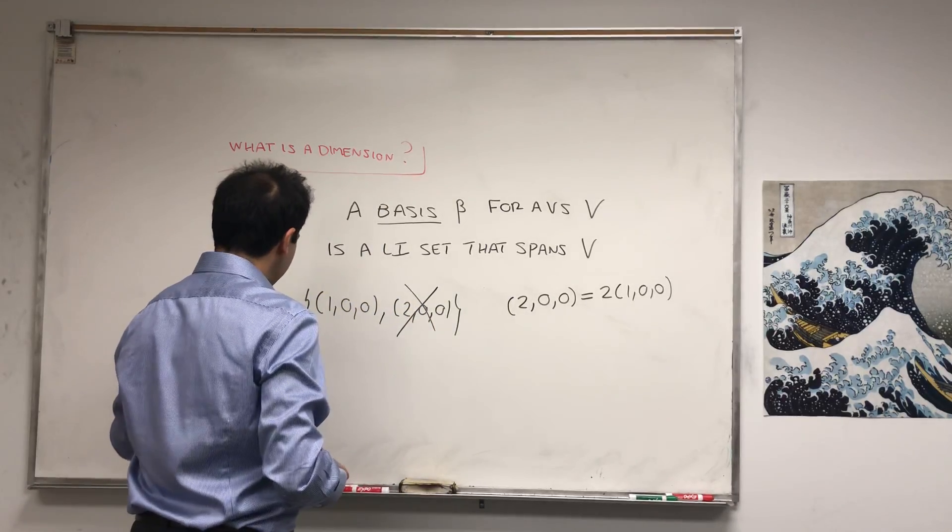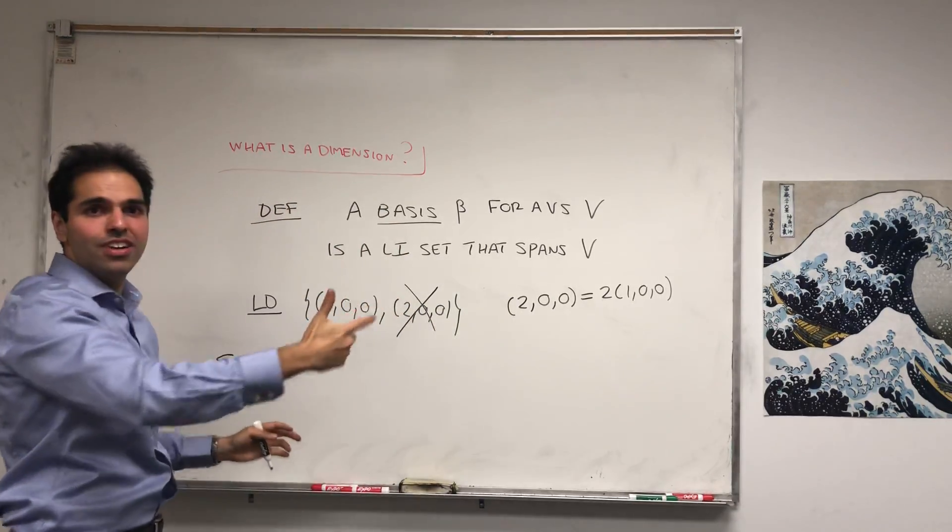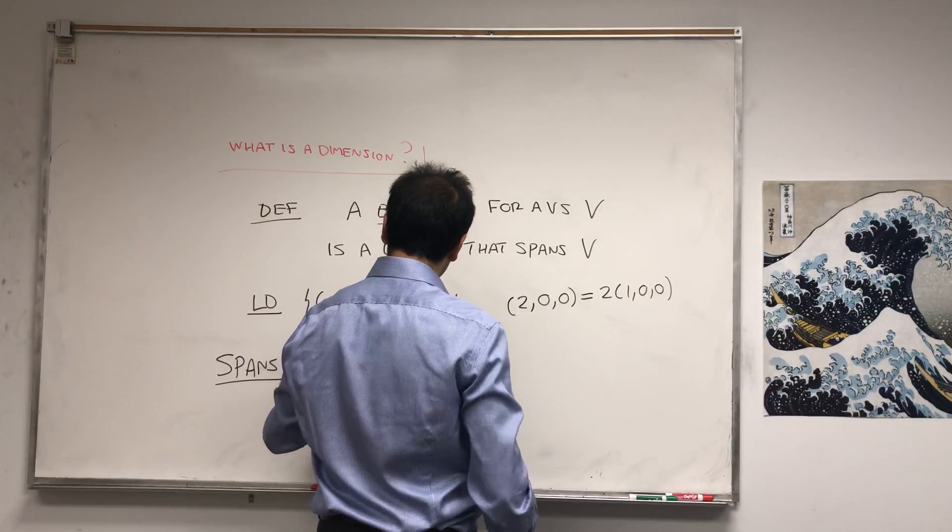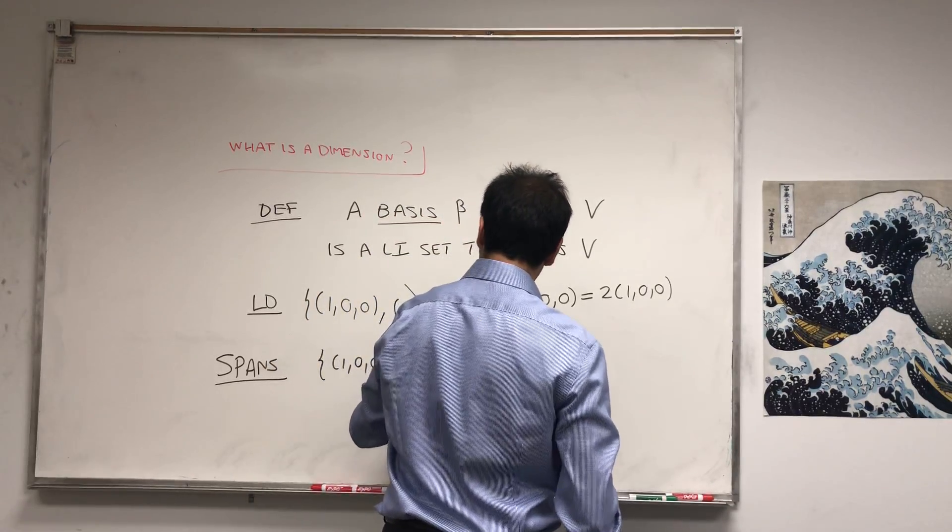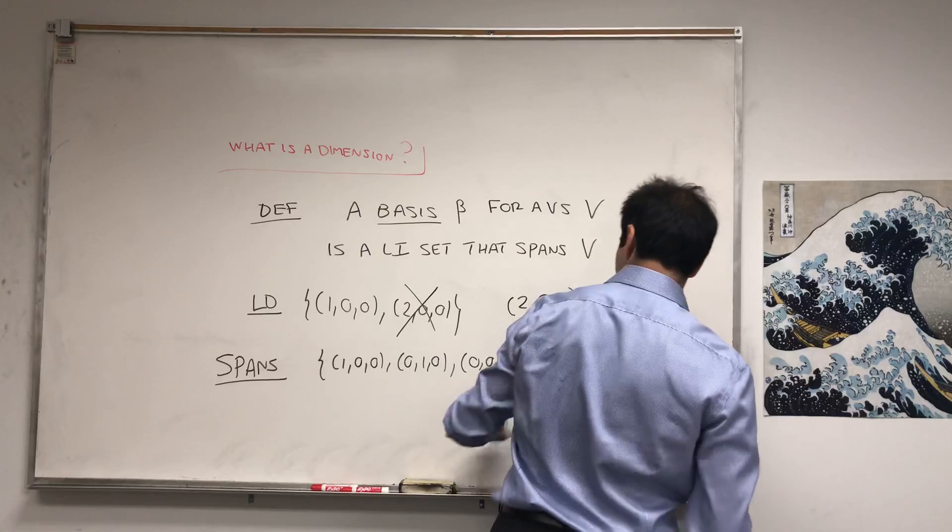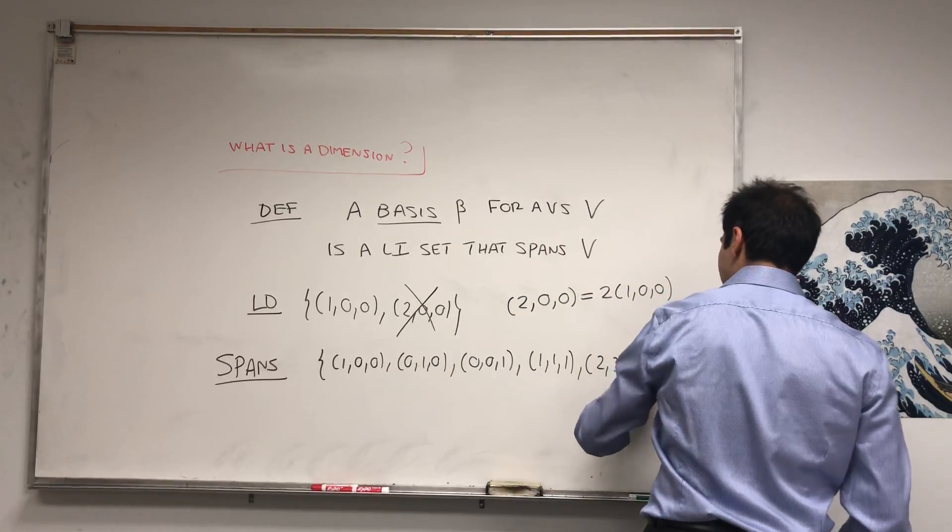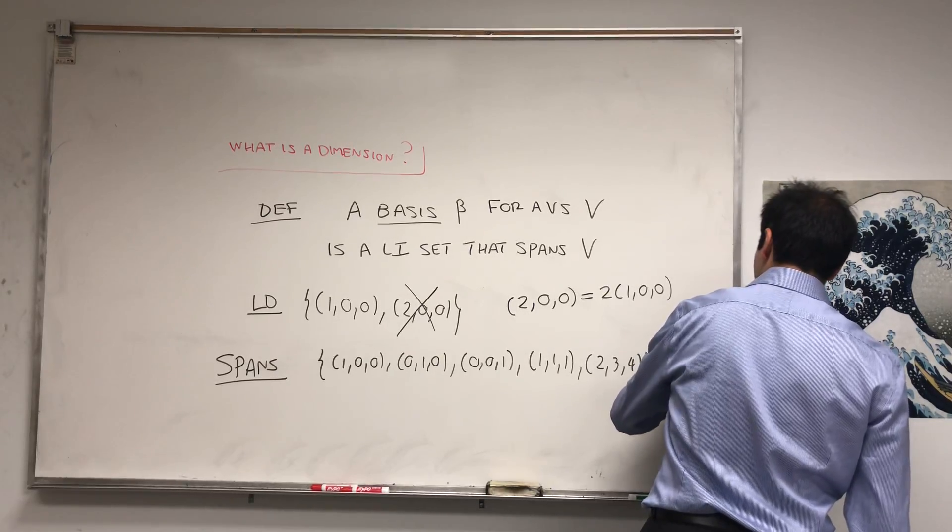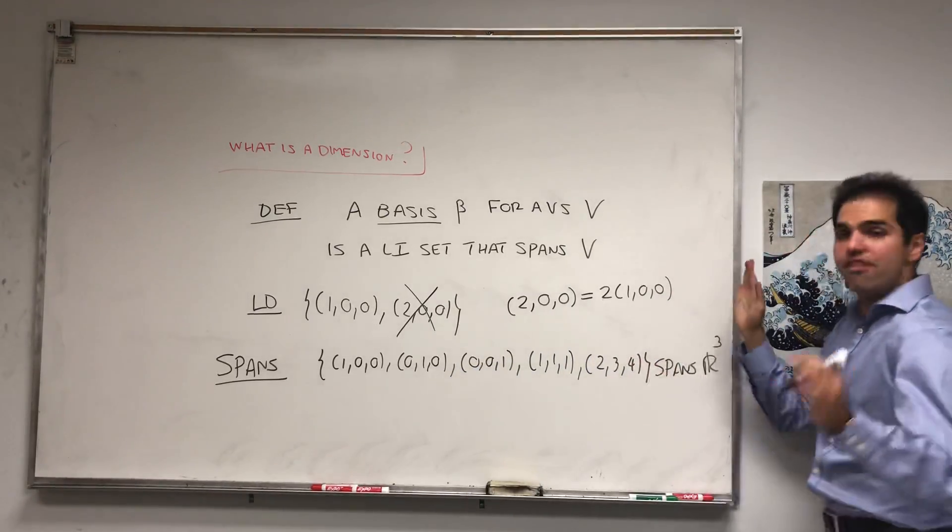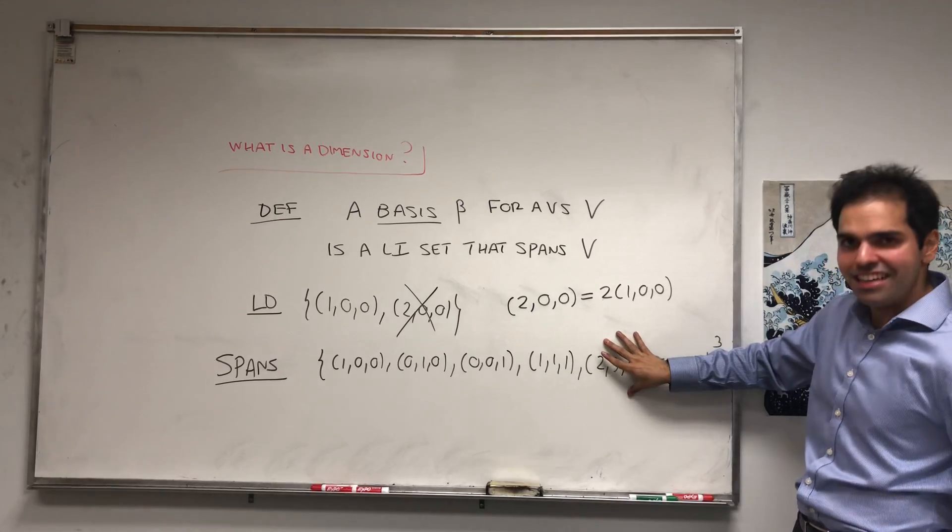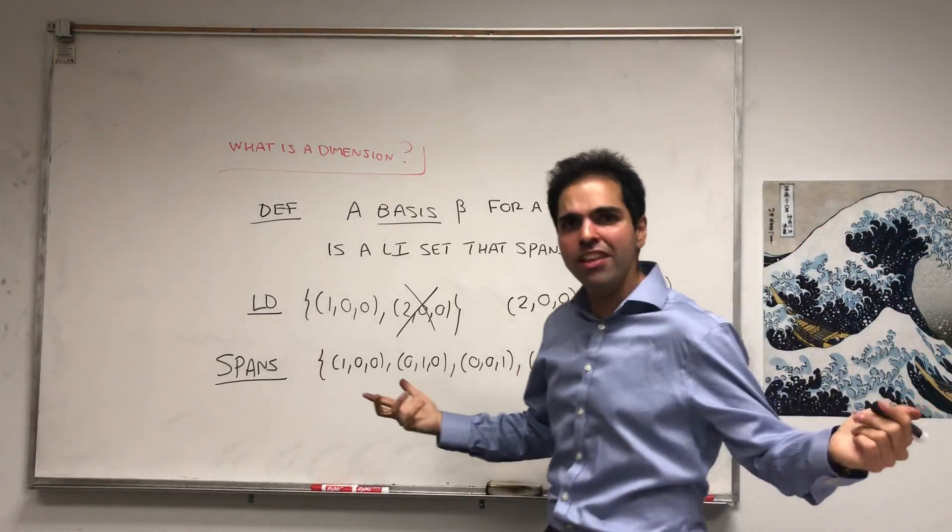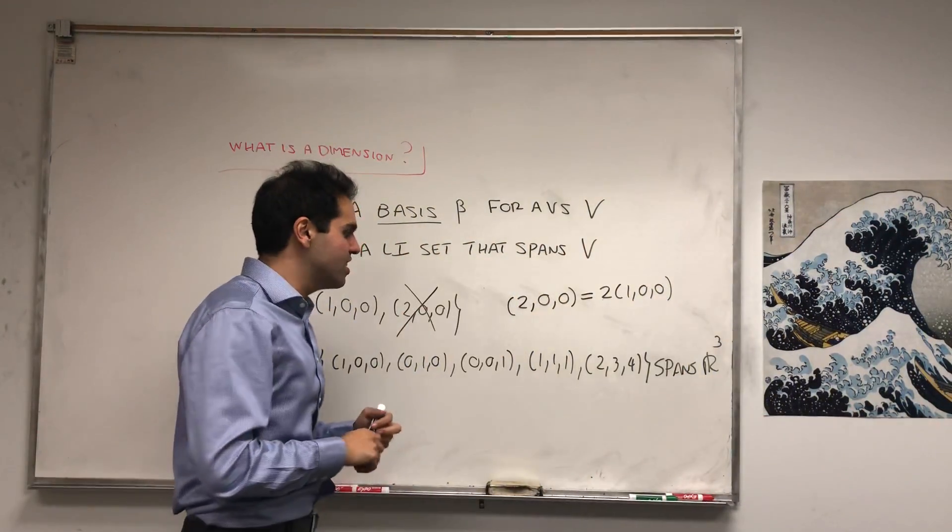And spans means any vector can be written in terms of those directions. So for example, this set: (1,0,0), (0,1,0), (0,0,1), (1,1,1), (2,2,3), (2,3,4), etc., spans R³ because any point you want you can write in terms of those five vectors. Obviously, notice those are redundant. So in some sense, a basis is a very efficient set. It's one that expresses all the information we have but with an efficient number of vectors. I'm sure there's some data science application of this.